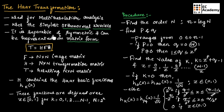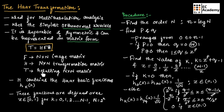Haar transformation is separable and symmetric, and it can be represented in the form of a matrix. We can represent Haar transformation as T equals HFH, where F is an n×n image matrix, H is an n×n transformation matrix, and T is the resulting n×n matrix.